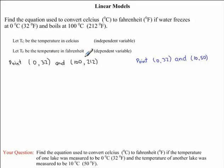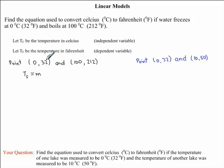From these two points, we can now develop the equation of the line used to convert Celsius to Fahrenheit. But before we derive this equation, we need to write out the general formula for a line. The general equation for a line is the dependent variable — T subscript F — equal to M times the independent variable — T subscript C — plus B.